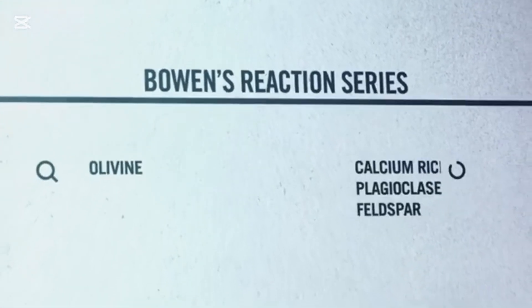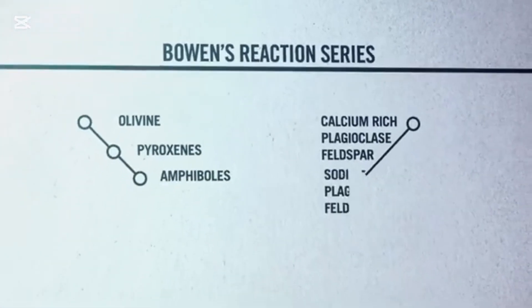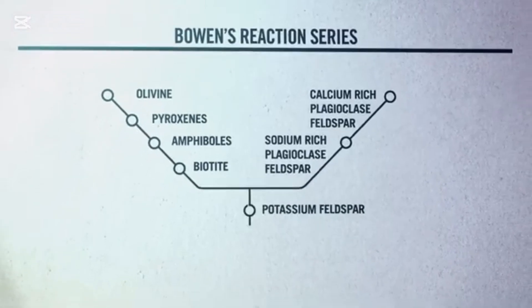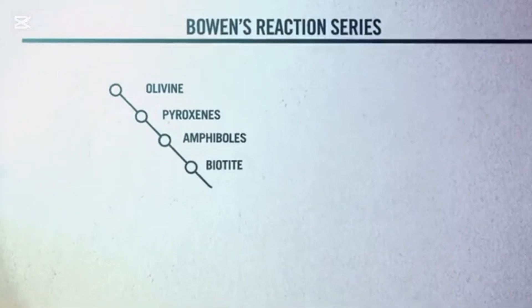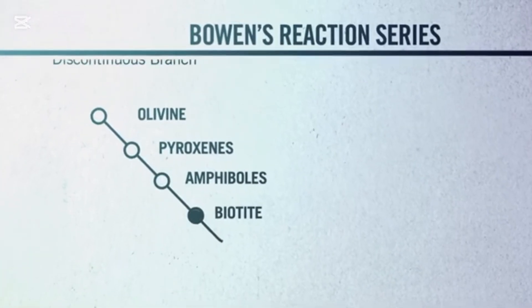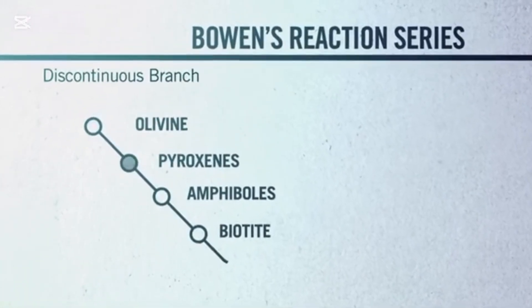As he cooled the magma and crystals began to form, Bowen noticed that new minerals formed because the arrangement of atoms in the minerals changed, and so did the elements that made up those minerals. Bowen called this sequence of mineral formation, from olivine to biotite, the discontinuous branch, because during each step, a new mineral formed.